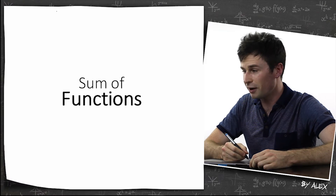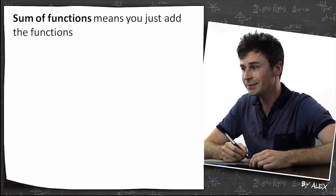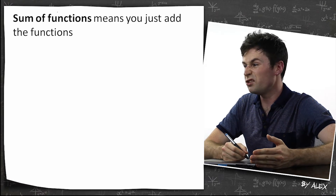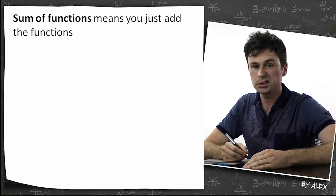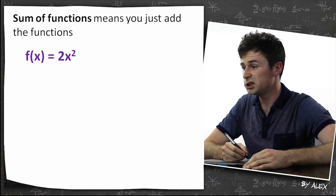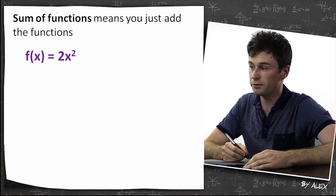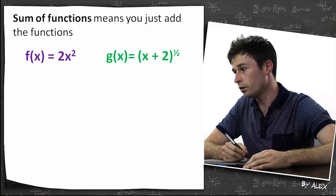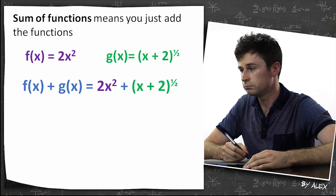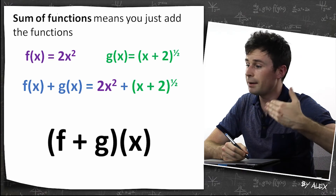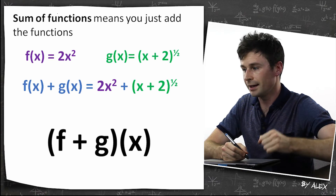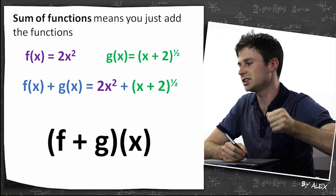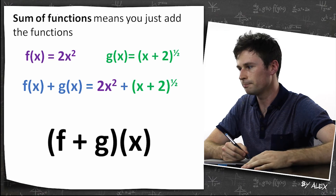The sum of functions means you just add the functions — that's pretty much it. So you've got f of x equals 2x squared, g of x equals x plus 2 to the power of half — you add them. That's the sum of functions, and we usually write it as f plus g of x.